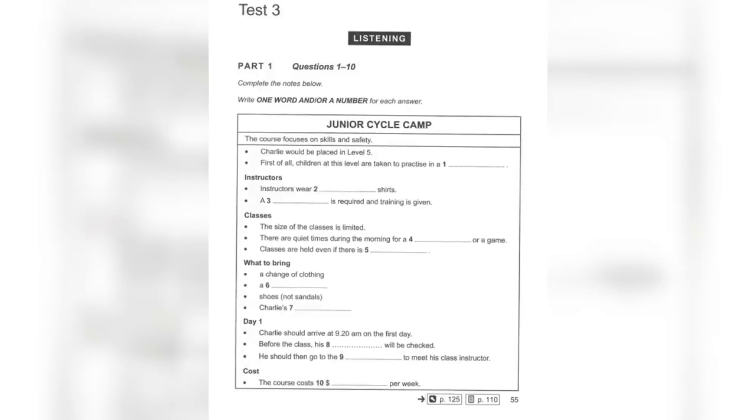Now turn to part one. Part one. You will hear a woman phoning to ask about a summer cycling camp for her young son who is called Charlie. First you have some time to look at questions one to five. Now listen carefully and answer questions one to five.